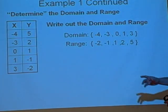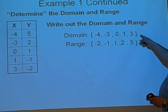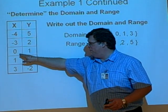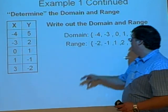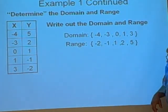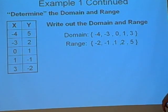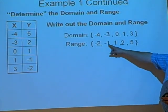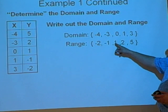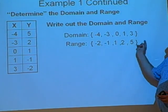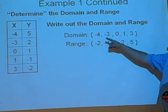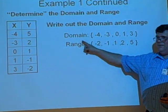Now, the domain is all of the x-values. So it would be {-4, -3, 0, 1, 3}. Those happen to be in order already and there are no repeats. So you're good. Range is all the y-values: {-2, -1, 1, 2, 5}. You do need to put them within fancy brackets. You do need to label them as domain and range.